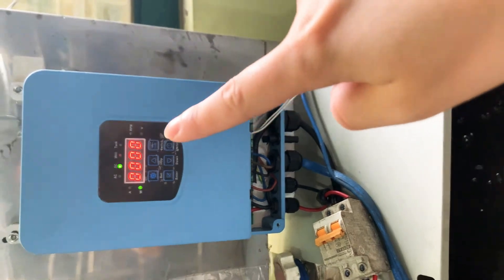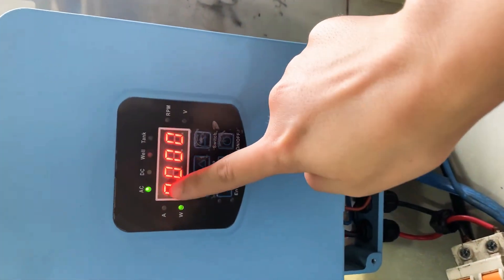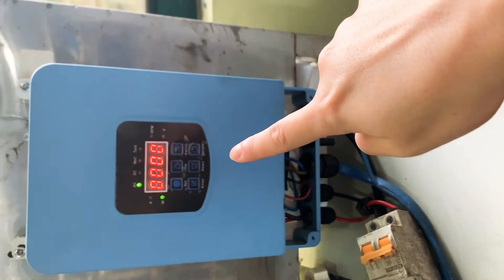Now it will switch to AC electricity automatically. Now you can see AC electricity.